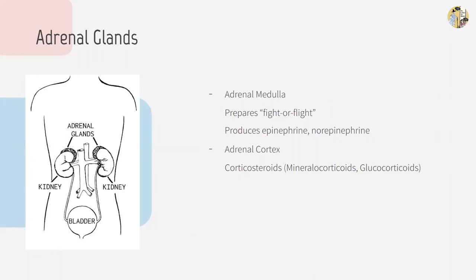There are two adrenal glands, one on top of each kidney. The adrenal medulla produces epinephrine and norepinephrine in response to stress, the so-called fight-or-flight response. These hormones raise blood pressure, breathing rate, and metabolic rate. The adrenal cortex, the other portion, becomes activated in stressful homeostatic conditions and produces corticosteroids, which maintain salt and water balance and increase glucose levels by synthesizing from lipids and proteins.